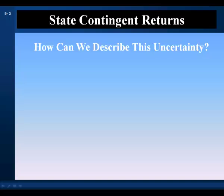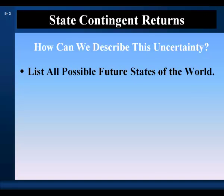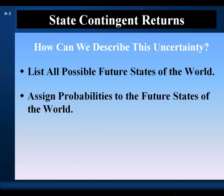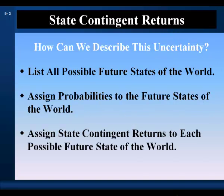We can describe this uncertainty by doing three things. First, list all possible future states of the world — these are all possible future scenarios, alternative futures, that could occur over a future period of time. Second, assign probabilities to the future states of the world. Third, assign state-contingent returns to each possible future state of the world. This is the return the security will earn if that state actually happens.